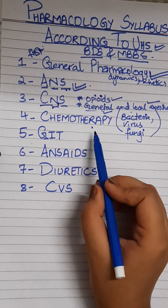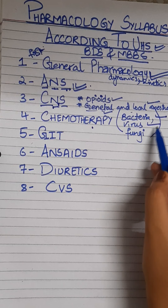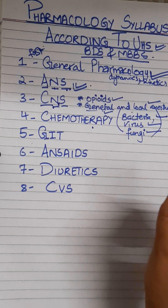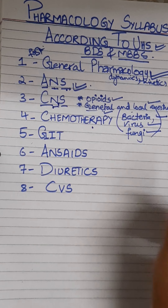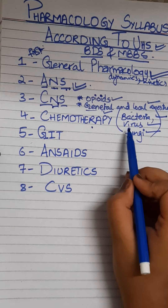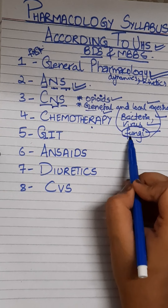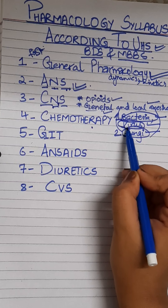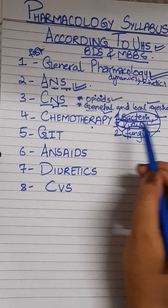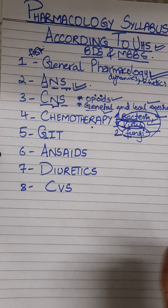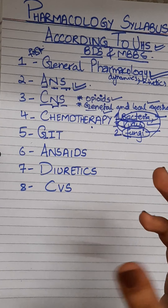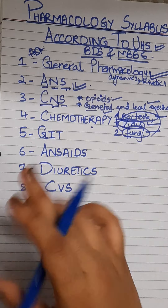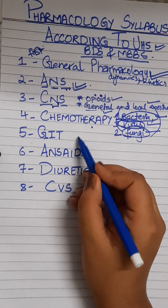Then comes chemotherapy. Chemotherapeutic drugs include bacteria, viruses, and fungi. Antibacterial drugs are the most important in pharmacology, followed by antifungal drugs, and then antiviral drugs. For BDS students, antiviral drugs are not that important. You should have a basic concept of other drugs like antimycoplasmic drugs as well.